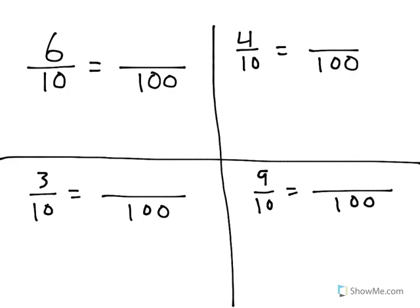Here we're going to take a look at that. Let's start at the top left. 6 tenths is equal to blank over 100. Remember, in order to convert and maintain equivalent fractions, you have to multiply the numerator and denominator by the same number.